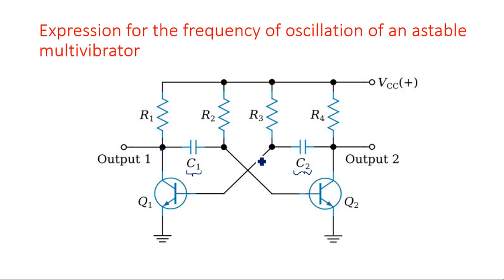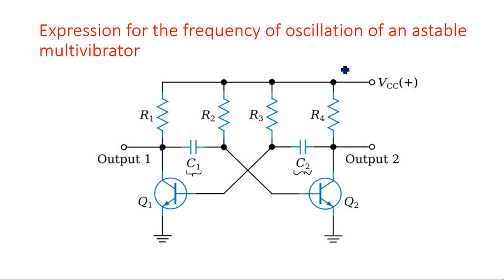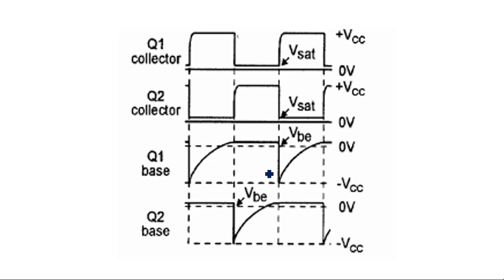As both capacitors exist on either side as coupling elements, they automatically charge and discharge, changing the states automatically, leading to unstable states. Both states are quasi-stable states, so there is no use for a triggering pulse in the astable multivibrator. We measure output waveforms at four places: at the collector and base of each transistor.